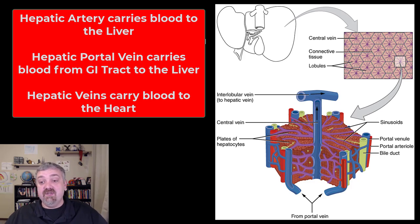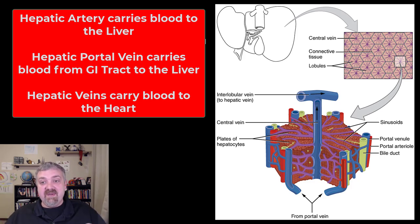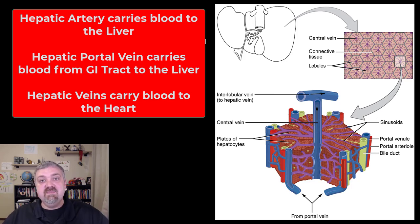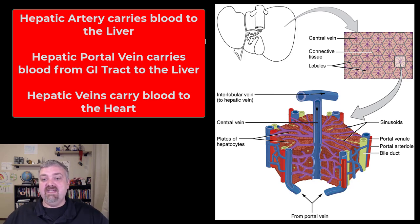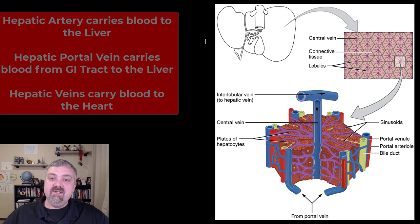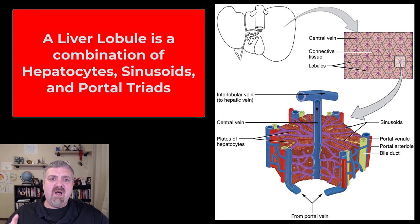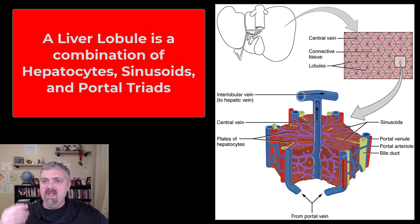The liver also stores a lot of material. If the liver needs to release anything, it'll dump it into the blood supply, and that's going to be carried back with your venous blood through the hepatic vein to your inferior vena cava, to your heart, and then it goes wherever it needs to go.